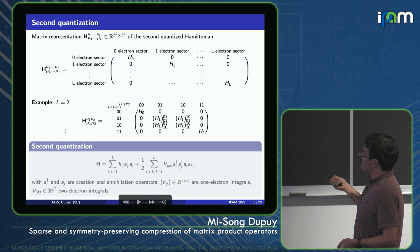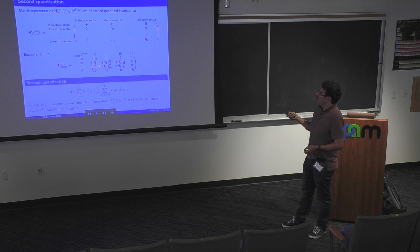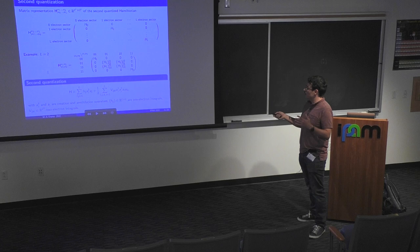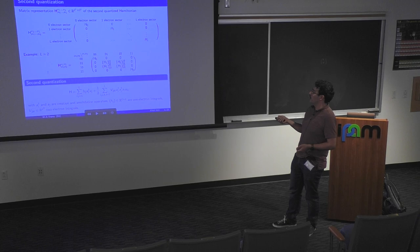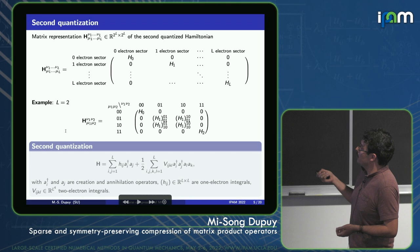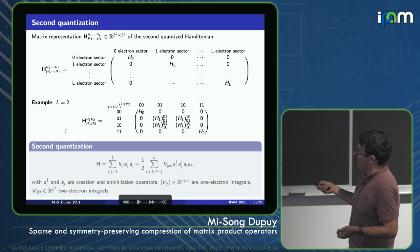For L=2 we have a 4×4 matrix: a size-1 zero-particle sector, a one-particle sector matrix in the middle, and a two-particle sector. The right way to represent this operator uses second quantization — writing the full 2^L × 2^L matrix as a sum of creation and annihilation operators with one-body and two-body terms.